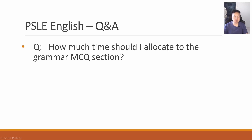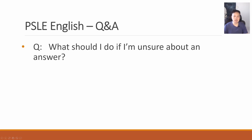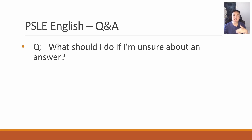How much time should I allocate to the grammar MCQ? Typically, it's about one to two minutes per question. What should I do if I'm unsure about an answer? If you're about 40 to 50% unsure, just write down the answer and shade the OAS. But if you're 100% unsure, mark down with pencil next to the question and make sure you come back to it later. Don't spend five to ten minutes trying to work out the answer at this very early stage.